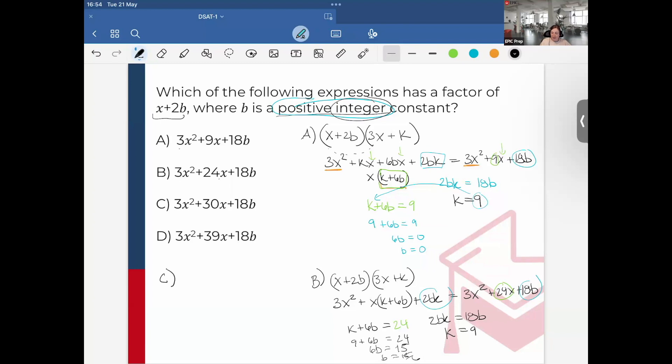For C, I can say k + 6b = 30. k is always 9, so 9 + 6b = 30. 6b = 21. This will also give me a fraction, so therefore it must be D. For D, k + 6b = 39. So 9 + 6b = 39, 6b = 30, b = 5. It gives me a positive integer constant for b. Therefore the answer is D.